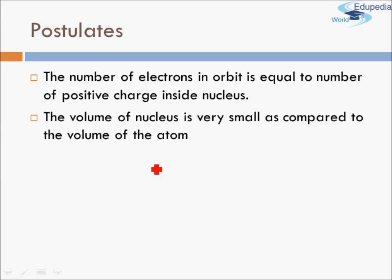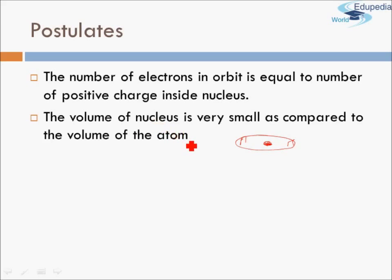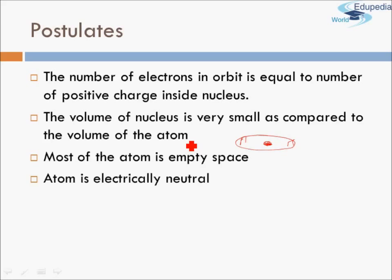This is essentially to keep the atom neutral — the total positive charge inside the nucleus will be equal to the number of electrons revolving around it. The volume of the nucleus is very small compared to the volume of the atom. If the volume of an atom is like a football field, then the nucleus is like an apple placed on that football field. This means most of the atom is empty space — even the solid objects around us contain atoms with mostly empty space.